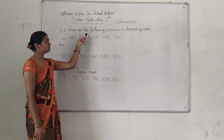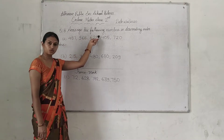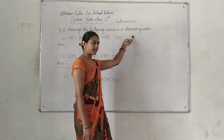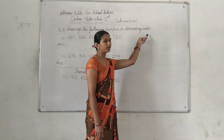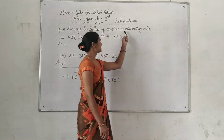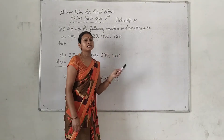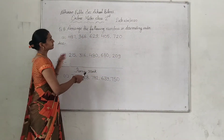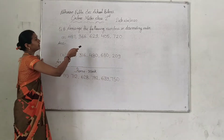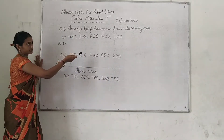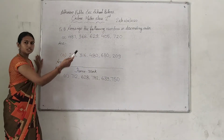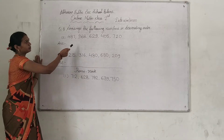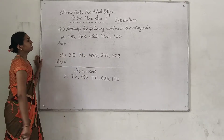Arrange the following numbers in descending order. This means order from big to small — the biggest number first, then going down to the smallest.